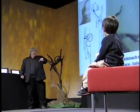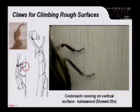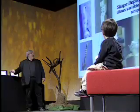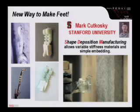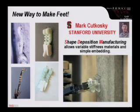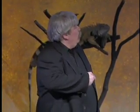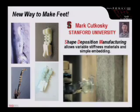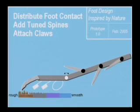Animals do really well at grabbing onto surfaces with claws. Mark Krakowski at Stanford University, one of my collaborators, is an extraordinary engineer who developed a technique called shape deposition manufacturing, where he can embed claws right into an artificial foot. Here's the simple version of a foot for a new robot. So, to our blueprint, let's attach claws.